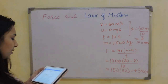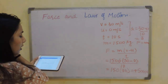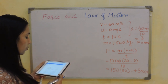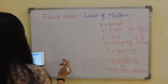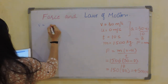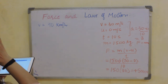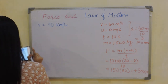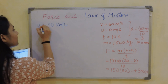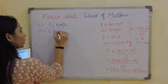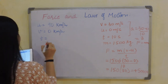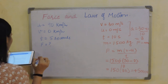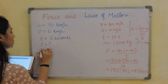Next question: a motorcycle is moving with a velocity of 90 km/h and it takes 5 seconds to stop after the brakes are applied. Calculate the force exerted by the brakes on the motorcycle if its mass along with the rider is 200 kg. I have initial velocity 90 km/h, final velocity 0, time 5 seconds, and mass 200 kg.